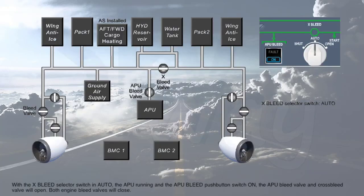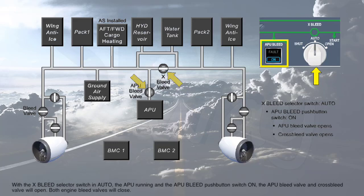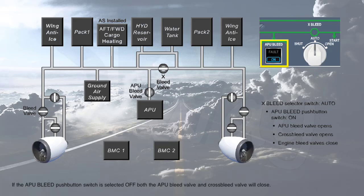With the cross-bleed selector switch in auto, the APU running, and the APU bleed push-button switch on, the APU bleed valve and cross-bleed valve will open. Both engine bleed valves will close. If the APU bleed push-button switch is selected off, both the APU bleed valve and cross-bleed valve will close. The engine bleed valves will open if the engines are running and the engine bleed push-button switches are on.